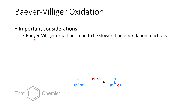In general, Baeyer-Villiger oxidations tend to be slower than epoxidation reactions. This isn't always the case, and sometimes you can favor one over the other, but I wouldn't say those are generalizable enough to say these conditions will only give epoxides and these will only give Baeyer-Villiger oxidation, because substrates and conditions vary from case to case.